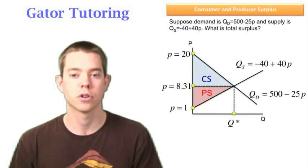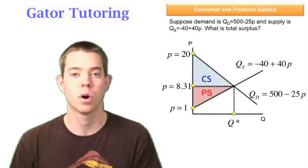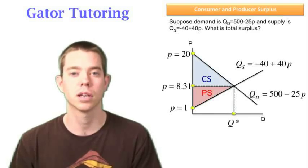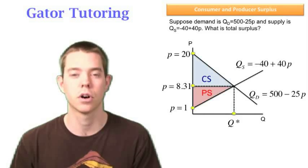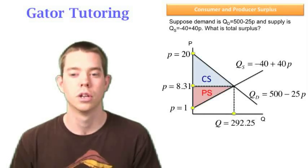But now that once you have that in your calculator, whatever price equals, you can plug it into either quantity supplied or quantity demanded to find Q star. And I'm going to choose to plug it into my demand function in this case. And I find that Q star is equal to 292.25.